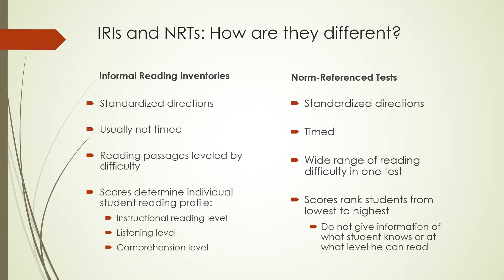In informal reading inventories, the scores that determine the individual student profile are the instructional reading level, listening level, and comprehension level. For norm reference tests, scores rank students from lowest to highest — they do not give information about what a student knows or at what level they can read, which is in contrast to informal reading inventories.